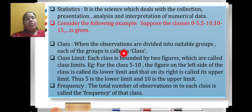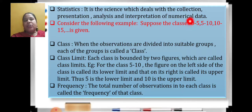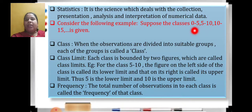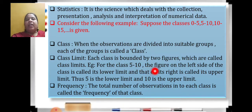What is class limit? Each class is bounded by 2 figures. Suppose I take the class 0 to 5 — it is bounded by 2 figures. The number written on the left hand side is 0, that is the lower limit. The number written on the right hand side is 5, that is the upper limit. For the class 5 to 10, this 5 is the lower limit and 10 is the upper limit.